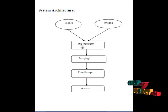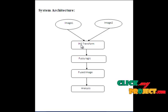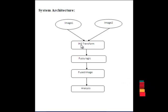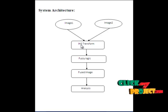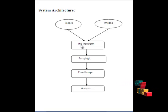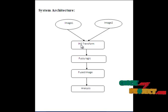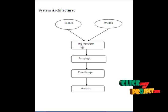Hue is described as red, green, blue, and yellow color properties. Saturation denotes the brightness and colorfulness of the provided input image. Intensity describes the brightness or dullness of the provided input image.